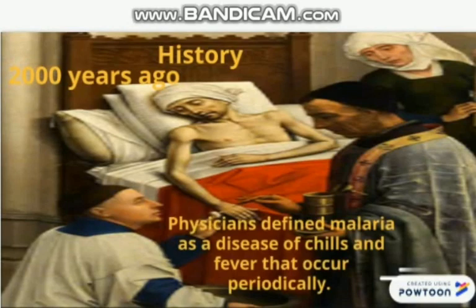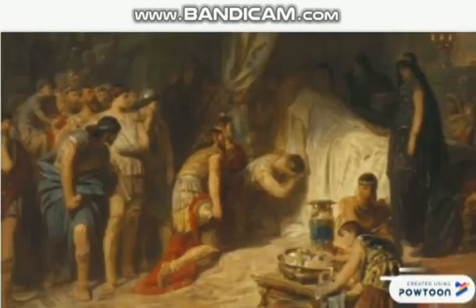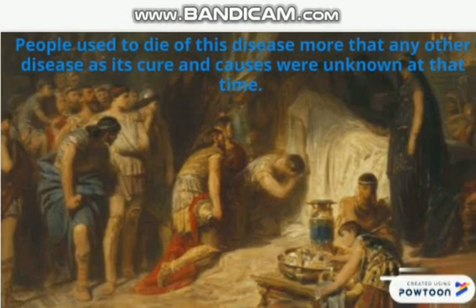In ancient times, almost 2000 years ago, physicians defined malaria as a disease of chills and fever that occurred periodically. Periodically means that it used to occur again and again. People used to die of this disease more than any other disease at that time because its cure and its causes were unknown.